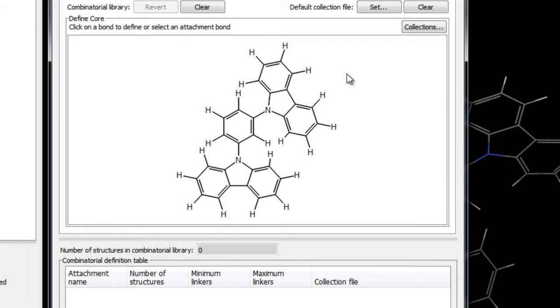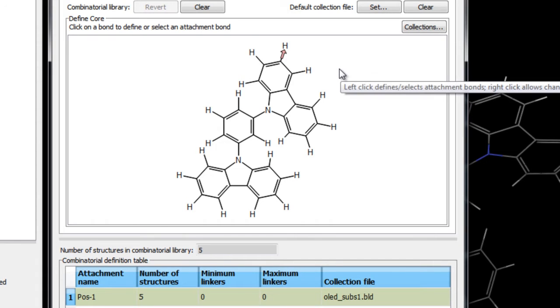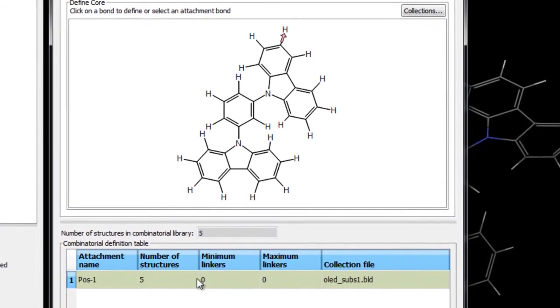Now that the fragment collection has been set, we can define the position for the R group enumeration by selecting the bonds in the core which become marked by the colored arrows. So here we have marked one attachment position in which the hydrogen will be replaced and enumerated with all the fragments in the collection file that we just set, which you can see contains five fragments.